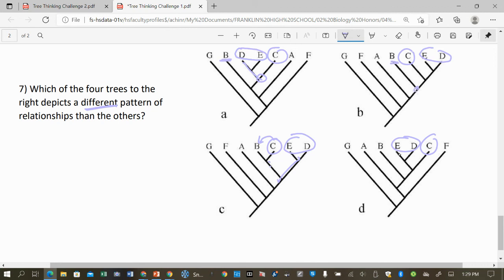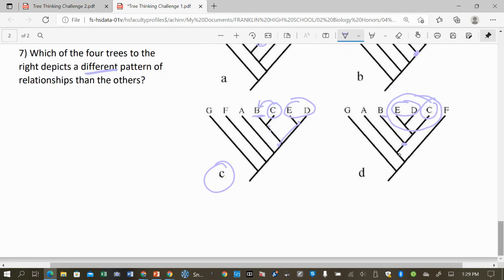So C is actually more closely related to E, D. C is closer to D and E. C is closer to D and E. This is the only one that shows that C is not more closely related to E and D. It's actually showing more closely related to C. So that one's different. And that is it for tree thinking one.